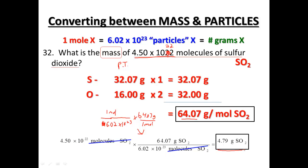You should get about 4.79 grams — remember, three significant figures is what we started with, so three significant figures for the answer. What we've done is combined converting between mass and particles, always stopping at moles. We can go from particles to moles to grams, or grams to moles to particles. We can now convert between each of those three parts and will continue practicing.